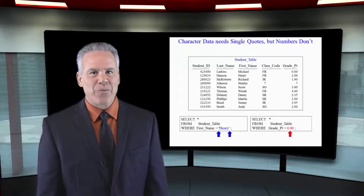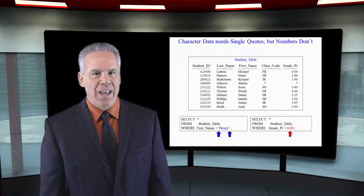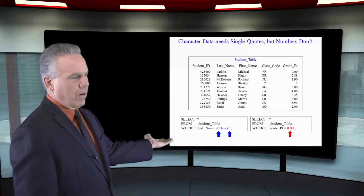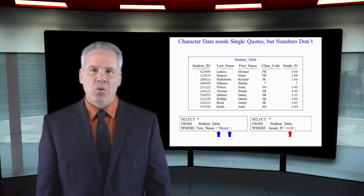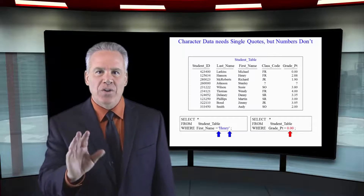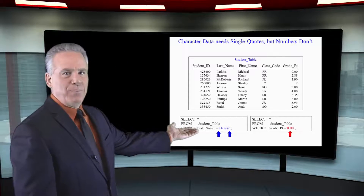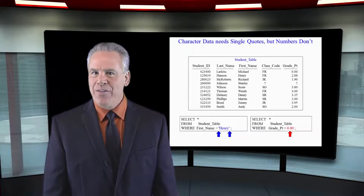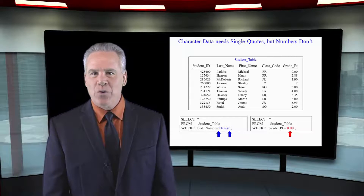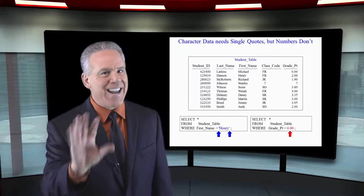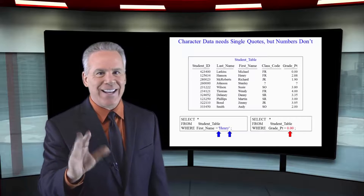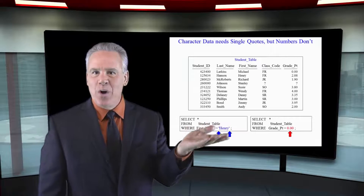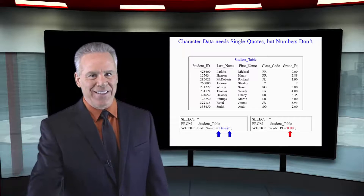As you can see in our first example, WHERE first name equals 'Henry', we need single quotes. But notice WHERE grade point equals 0.00 — there's no single quotes there because that's not character data, it's a number. Character data needs single quotes; numbers don't need anything.